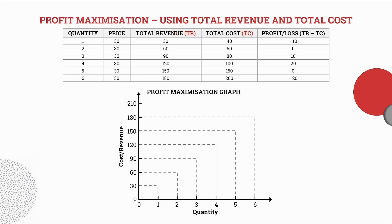Let's analyze our table. At quantity 1, our total revenue is 30 rand, our total cost is 40 rand, and a loss of 10 rand has been incurred. At quantity 2, our total revenue is 60 rand and our total cost is also 60 rand — when total revenue equals total costs, that is our break-even point. At quantity 3, total revenue is 90 rand, total cost is 80 rand, giving a profit of 10 rand. At quantity 4, total revenue is 120 rand, total cost is 100 rand, and profit is 20 rand.